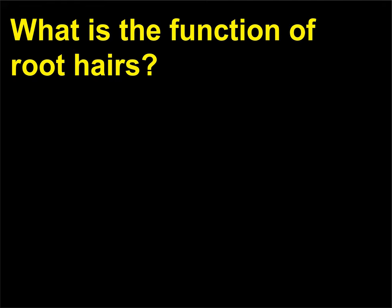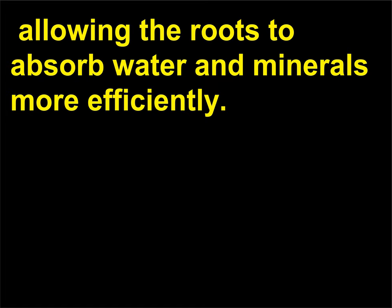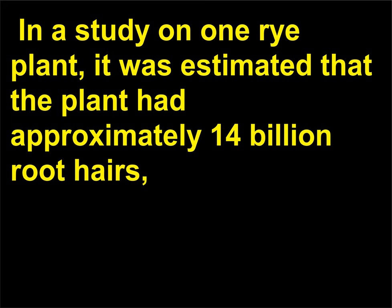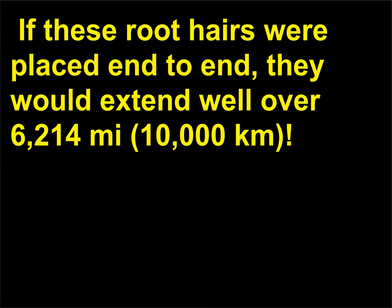What is the function of root hairs? Root hairs increase the surface area of the root system, allowing the roots to absorb water and minerals more efficiently. In a study on one rye plant, it was estimated that the plant had approximately 14 billion root hairs with an absorbing surface area of 480 sq yards (401 sq m). If these root hairs were placed end to end, they would extend well over 6,214 miles (10,000 km).